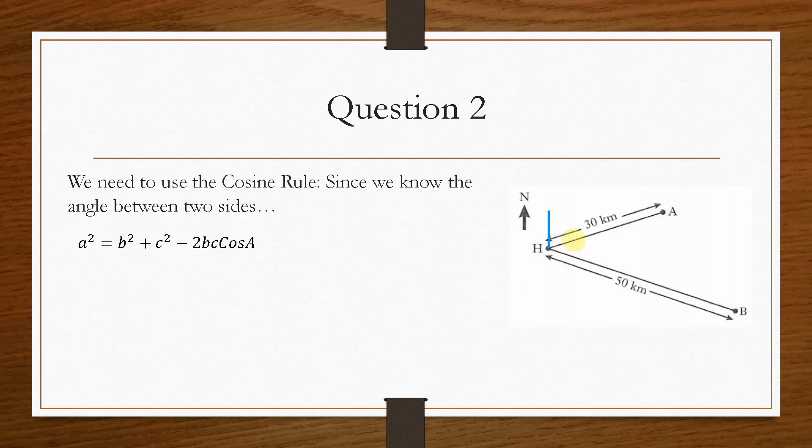Now granted we don't know this angle explicitly, but we can work it out. So again this is the side that we're needing to find. So this will be A, so that means that this angle in here must be capital A. And then we know B and C. So we just need to determine what this angle is.